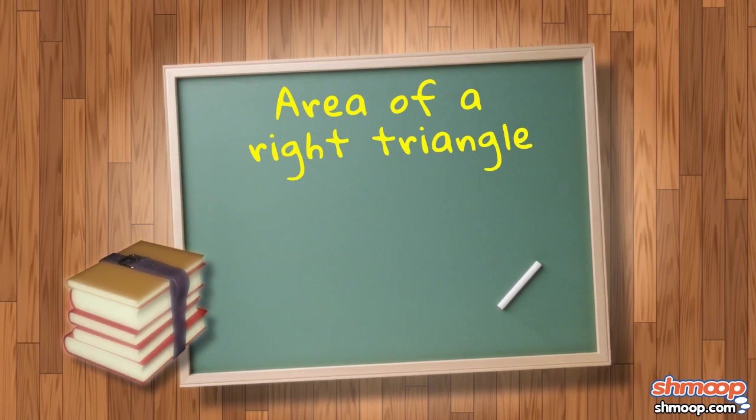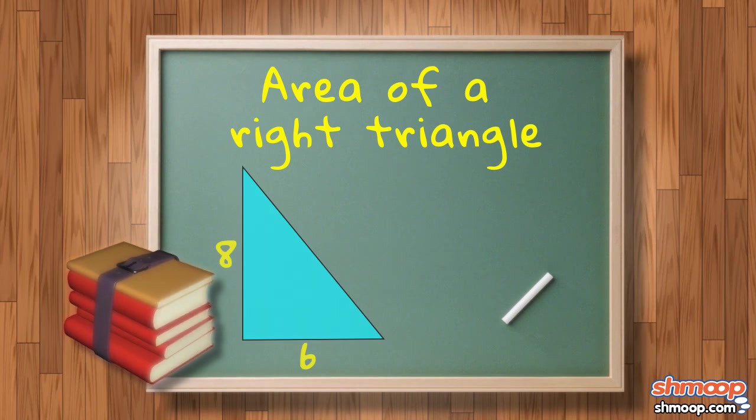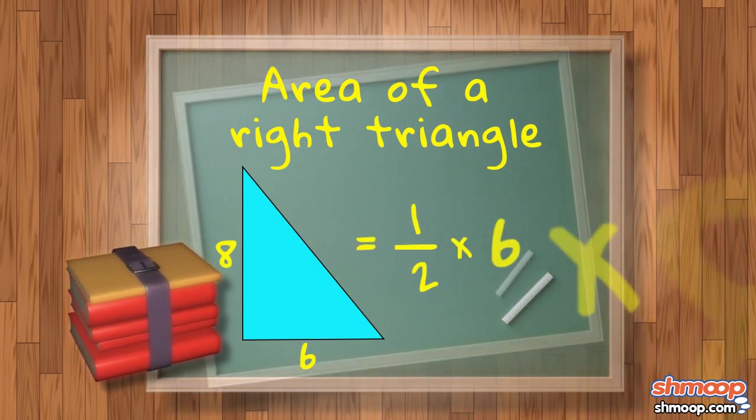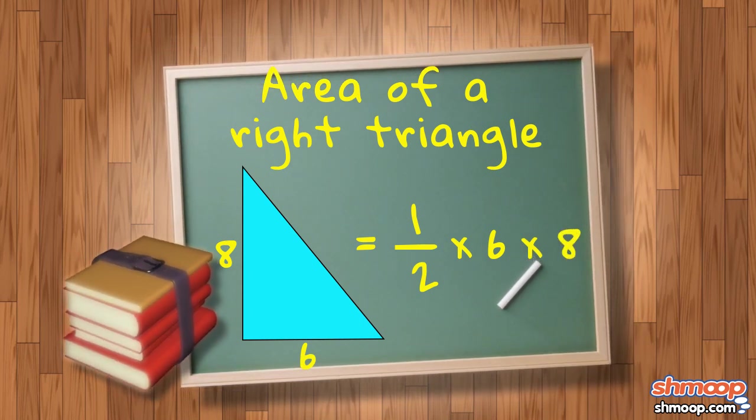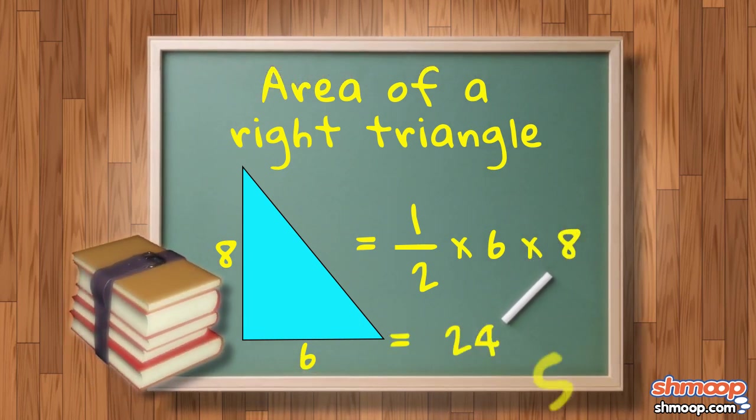To find the area of a right triangle, the formula is one-half the base times the height. So for these bizarro walls, we would take one-half times the measurement of the base of the wall, which is six feet, and multiply that by the height, which is eight feet. One-half of six is three times eight is twenty-four square feet.